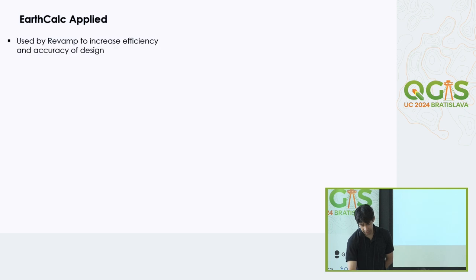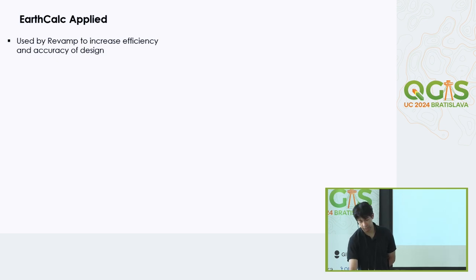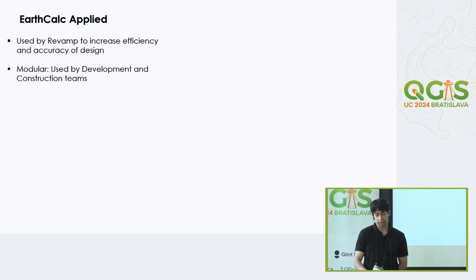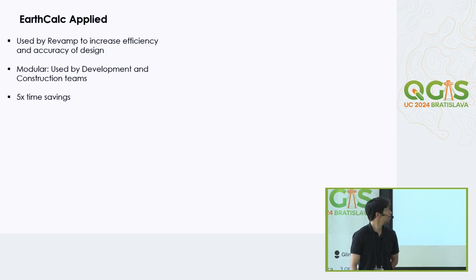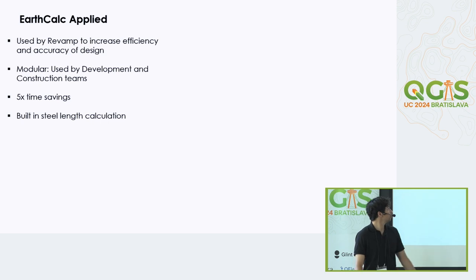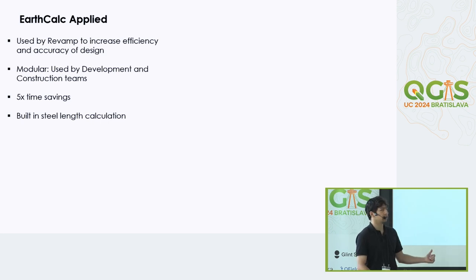In terms of applications, we've used EarthCalc consistently to increase efficiency and accuracy of our designs at Revamp. It's modular — different algorithms and solutions can be applied depending on which team is using it: development team for early stage, construction team for late stage. There's a 5x time savings: this process used to take one to two weeks and now we can get it done in around two days. There's also a built-in steel length calculation — because we create a piles database early on, we can calculate the amount of steel needed.